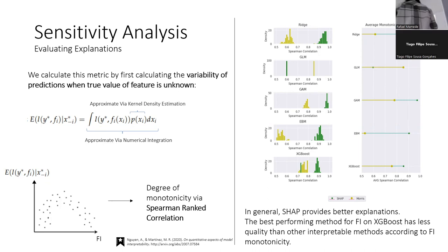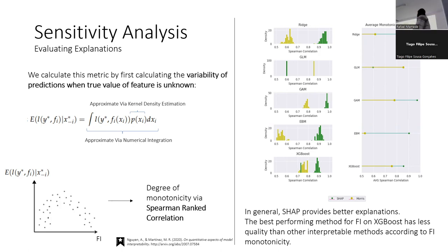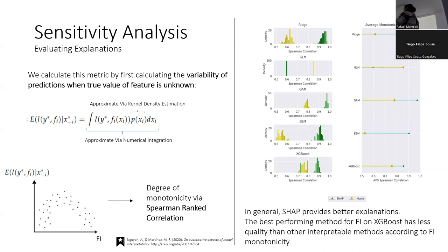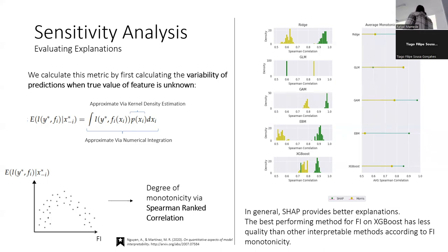When we compute this metric, we see two key things. First, the two explanation methods perform differently according to this metric, so we can use feature importance monotonicity to decide which method to trust — picking the one with the higher score. Second, interpretable models typically have higher feature importance monotonicity than the XGBoost model. So if we select a model purely based on explanation quality according to this property, we would pick something like the GAM model.